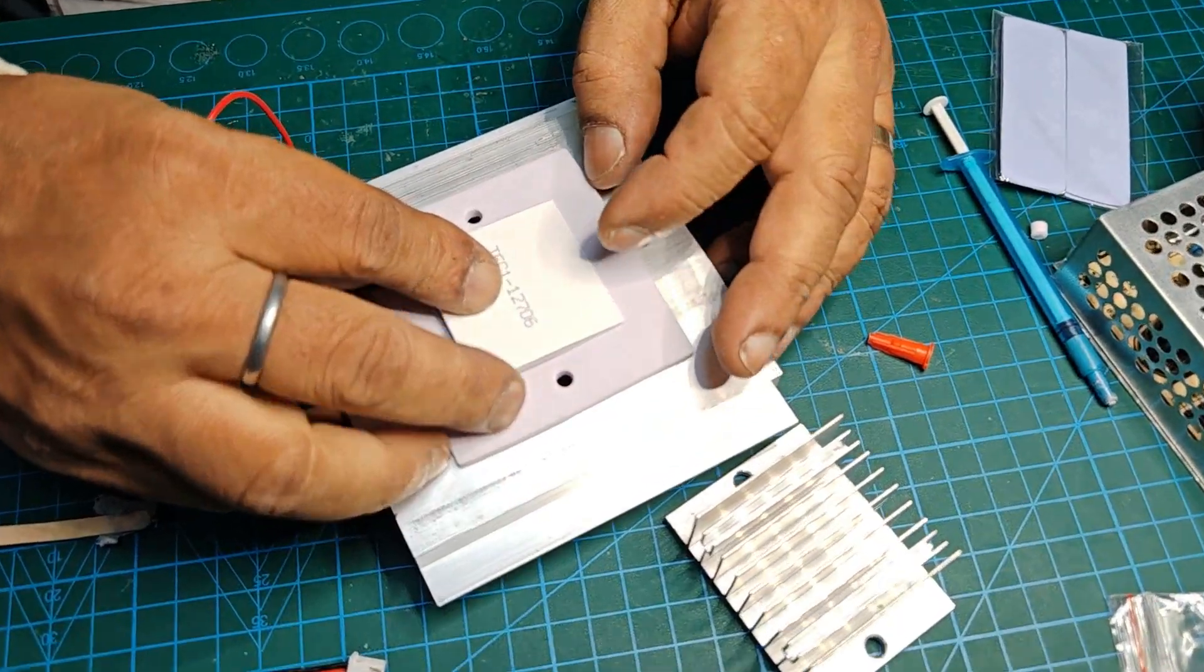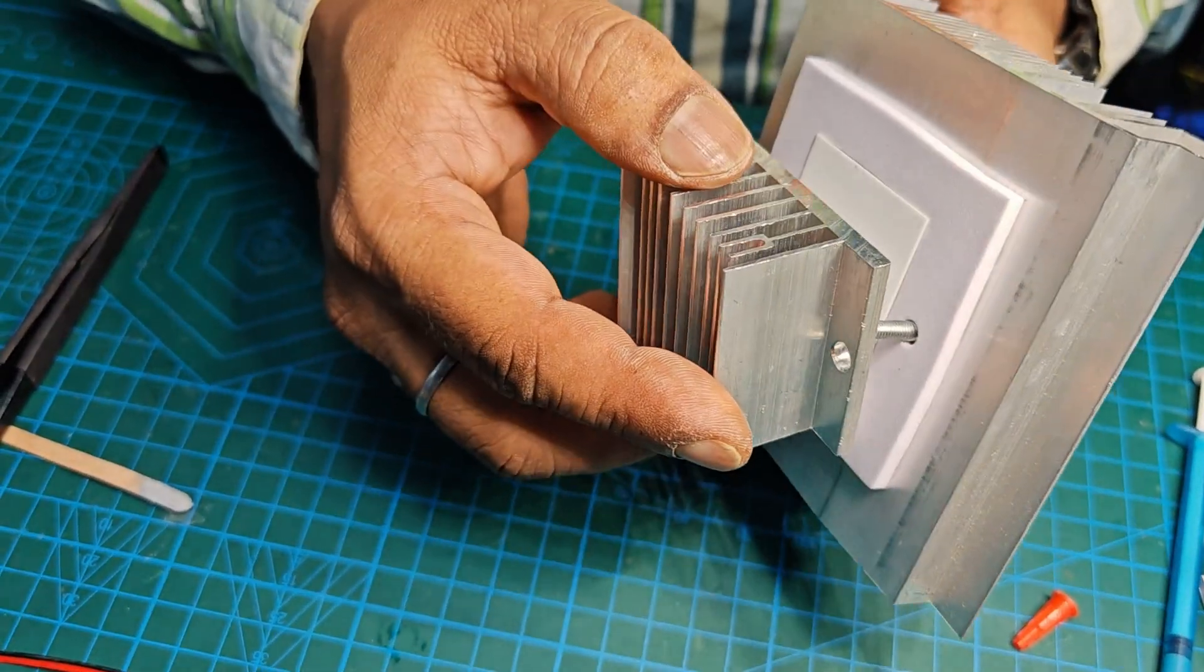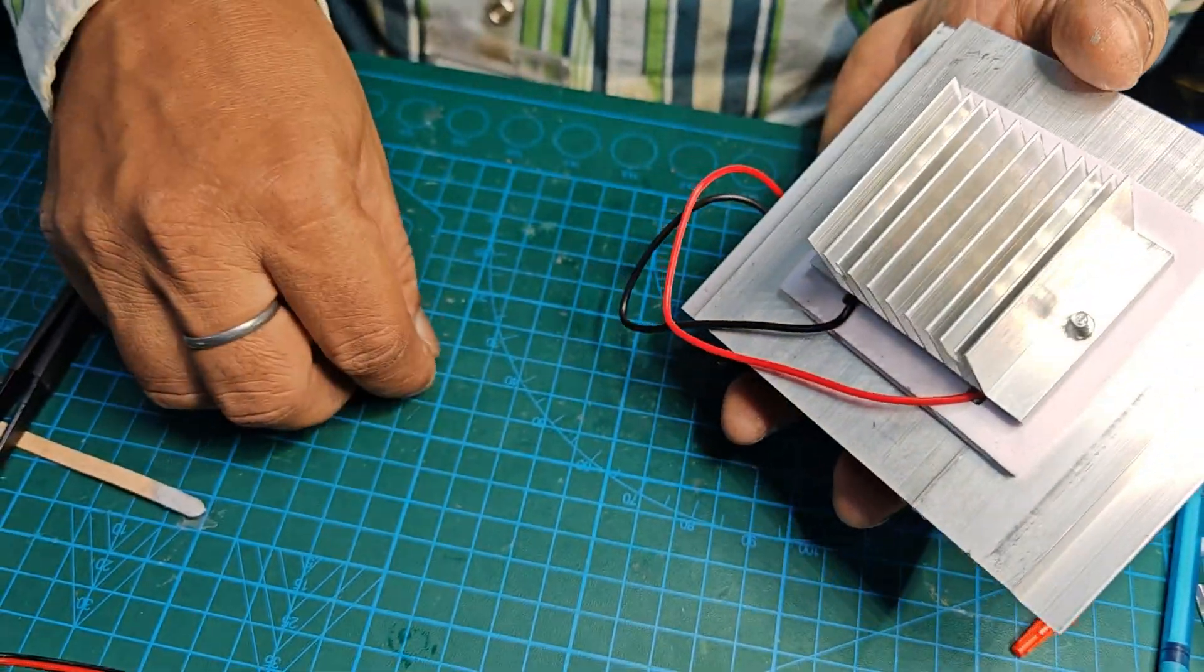So my dear friends, we have done with applying the thermal paste. Now you can place a heat sink over here and just tighten the screw.